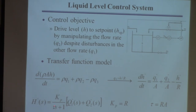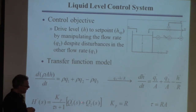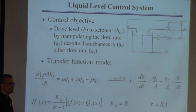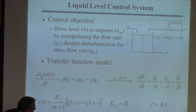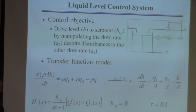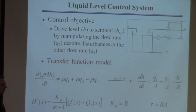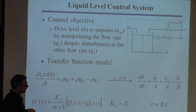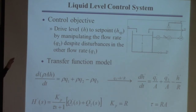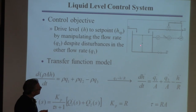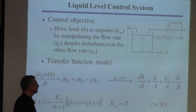Notice that the disturbance Q1 and the manipulated input Q2 have the same transfer function Gp. In our block diagrams we usually have a different GD for the disturbance and GP for the process, but in this case they're the same. It makes physical sense: it doesn't matter whether you increase Q1 or Q2 by 10 — it will affect the level the same way. So GD = GP for this problem.